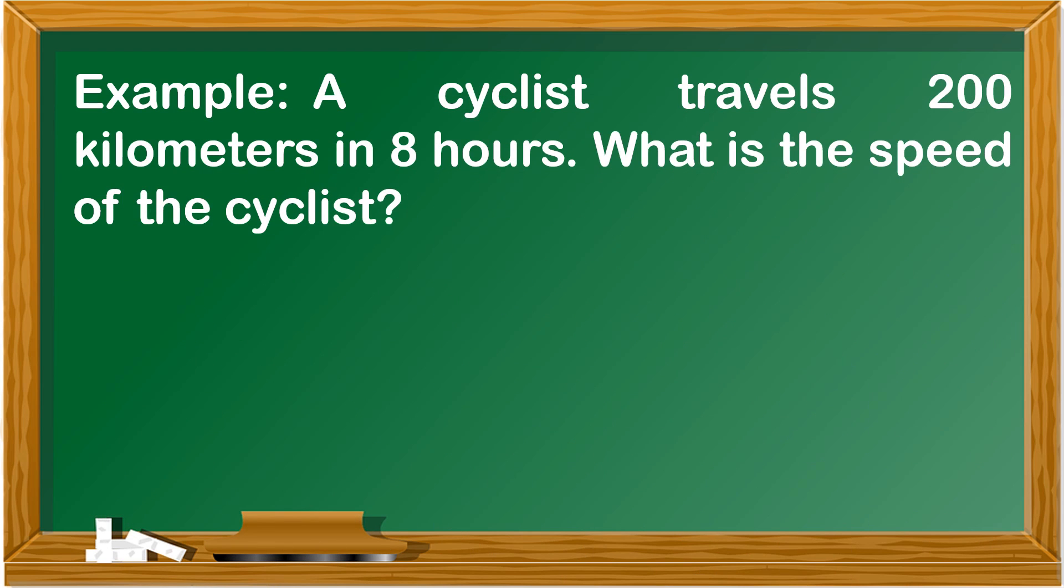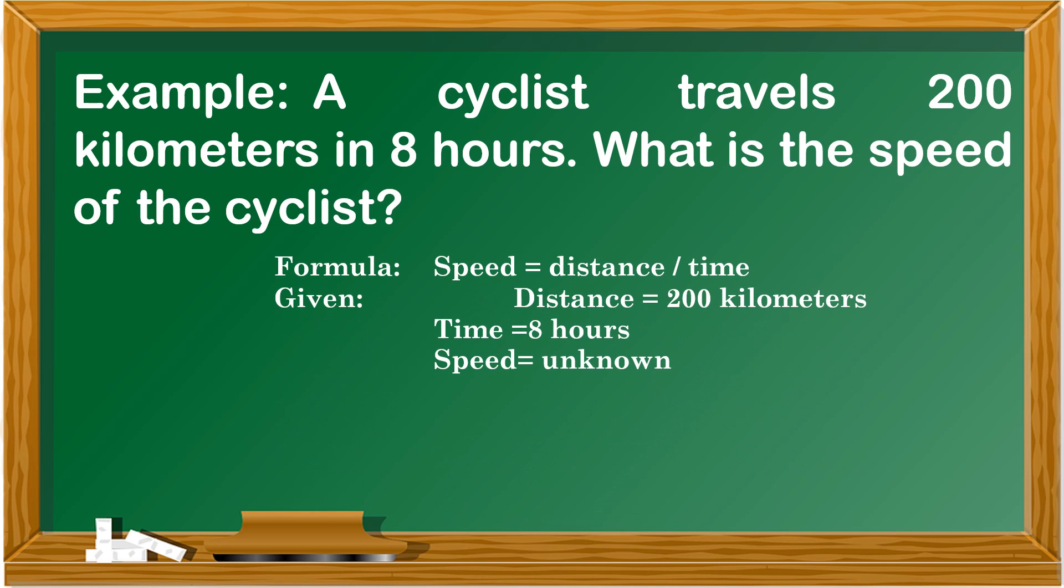Example: a cyclist travels 200 kilometers in eight hours. What is the speed of the cyclist? The formula is speed is equal to distance over time. Given distance is equal to 200 kilometers, time is eight hours, and speed is unknown. Speed is equal to distance over time, that is 200 kilometers over eight hours. The answer is 25 kilometers per hour.